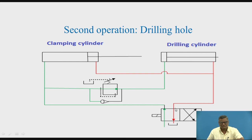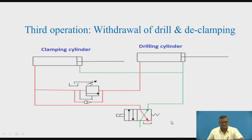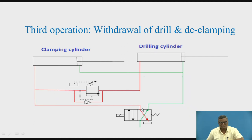During the return stroke, the spool shifts via solenoid operation, and P is now connected to B. Oil is supplied to the rod end of both cylinders simultaneously. The pistons of both the drilling cylinder and the clamping cylinder move back at the same time — withdrawal of drill and declamping occur simultaneously. The oil returning from the cap end of the clamping cylinder returns directly to port A, and A goes to T. The oil from the drilling cylinder returns through the check valve of the sequence valve, going to port A, and A is connected to T. That is the function of the check valve.